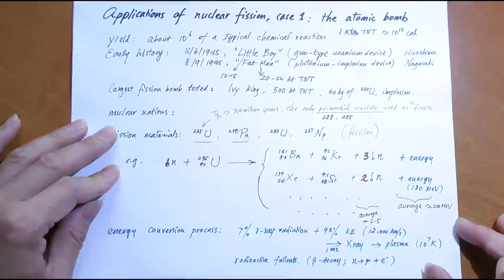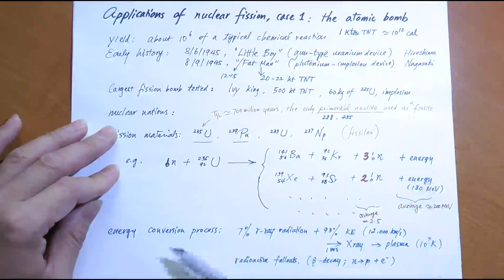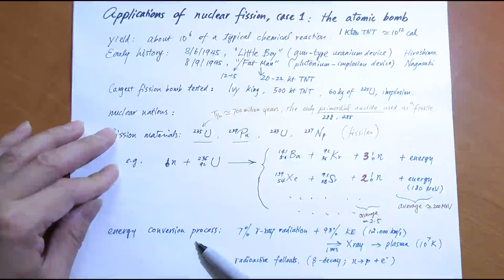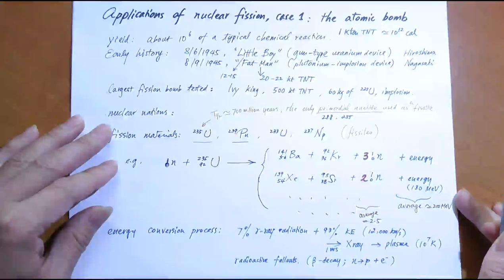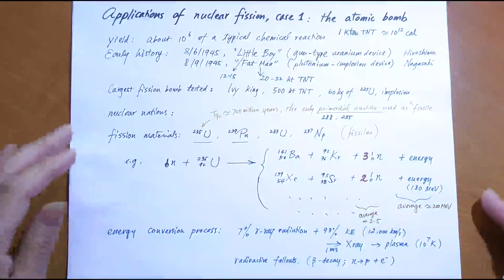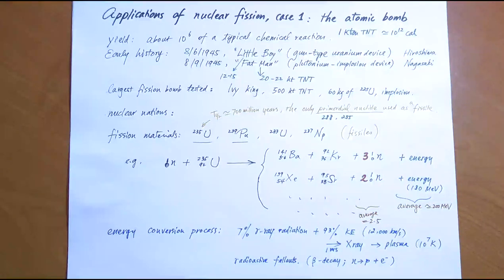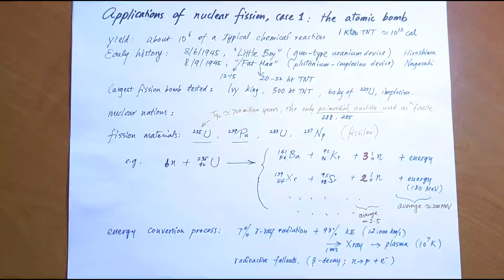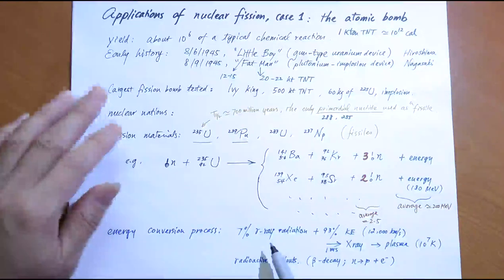In a fission atomic bomb, what happens after detonation? Nuclear fission typically takes place about half a microsecond after detonation — an extremely short time interval. After half a microsecond, fission starts and everything begins to explode very quickly. The energy release: 7% is gamma ray radiation, but 93% becomes the kinetic energies of the heavy particles involved, which can travel at speeds of 12,000 kilometers per second.